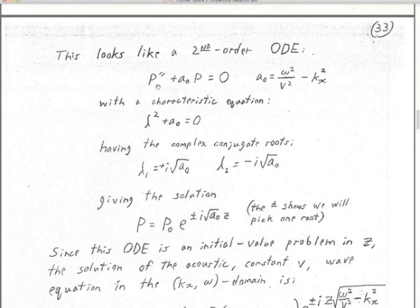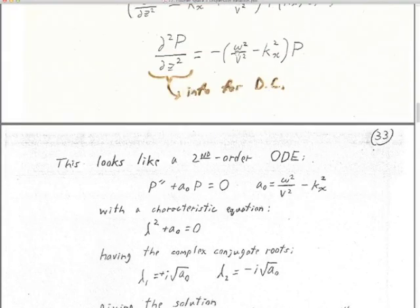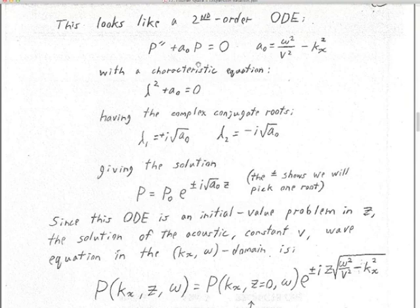This equation is a second-order ordinary differential equation. The only derivative is on p, and it's second order in z — this is just multiplication. Even though we know that derivatives are buried in here, it's just multiplication by a number. So it looks like: p double prime plus some numerical constant a₀ times the wave field undifferentiated equals zero. A₀ absorbs all that. There's the definition of a₀.